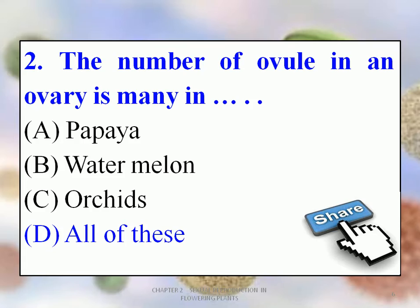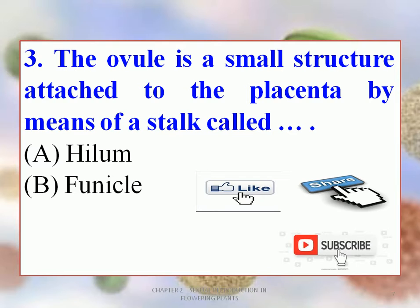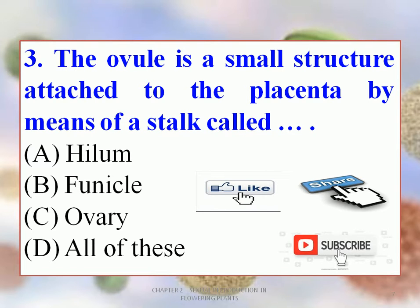Let's move to the next. The third question says: the ovule is a small structure attached to the placenta by means of a stalk called dash. Options are A. Hilum, B. Funicle, C. Ovary, D. All of these. The correct option is B — Funicle. Yes, the ovule is attached to the placenta by means of a stalk which is called the funicle.